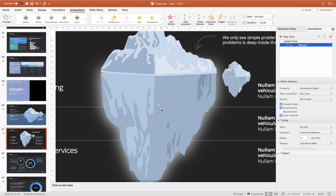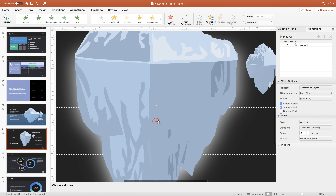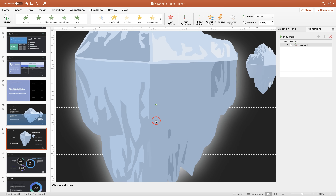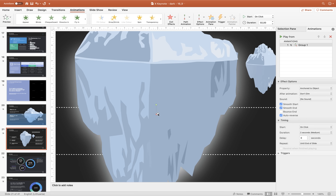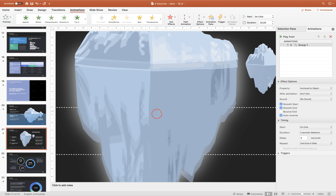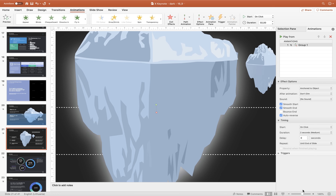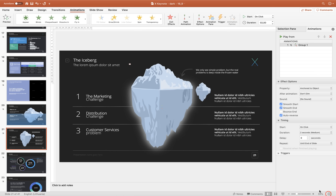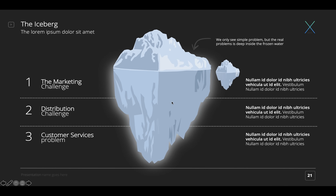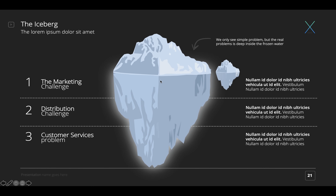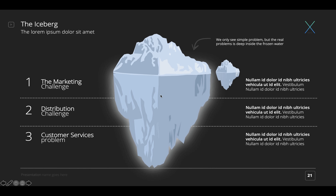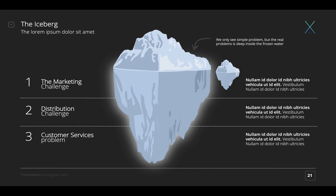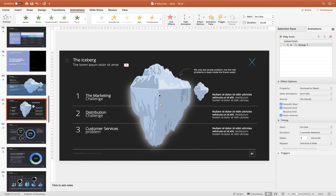We can zoom in and move the red bubble even closer to the green one so the floating animation is even more subtle. Let's preview on full screen: after we click, the iceberg goes down and then up, down and up — that's beautiful.